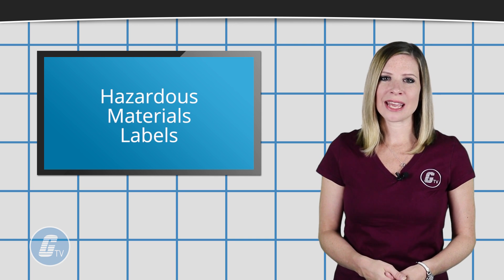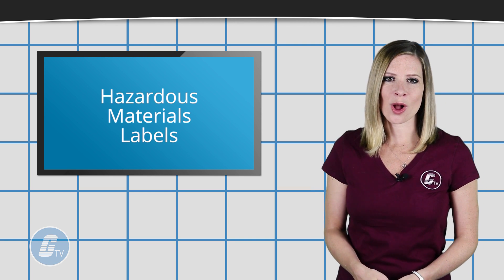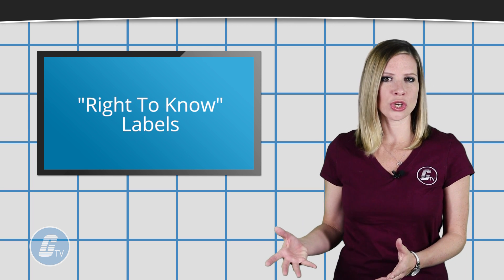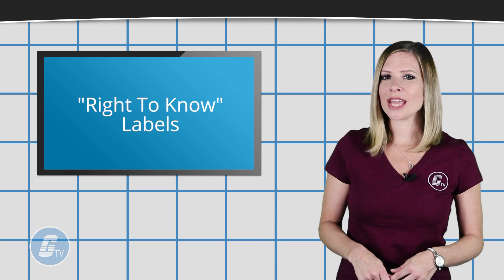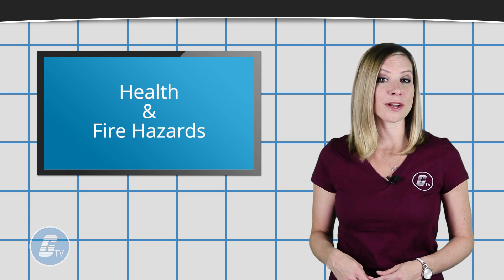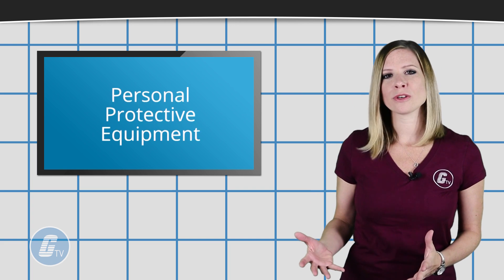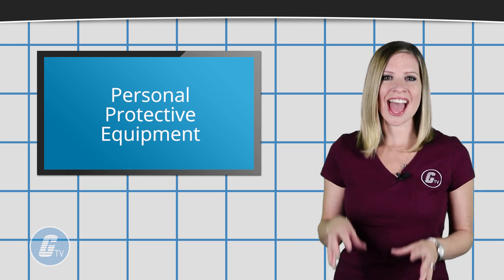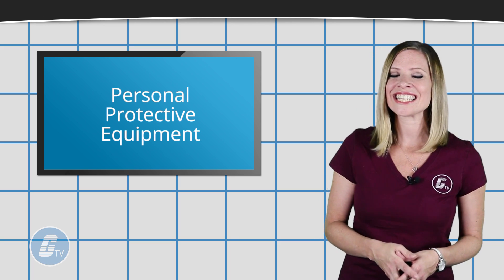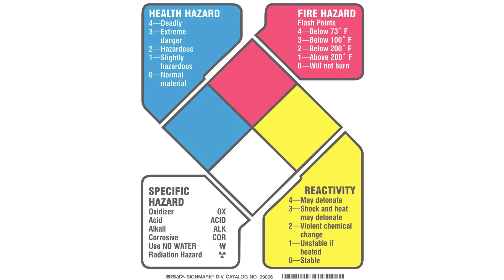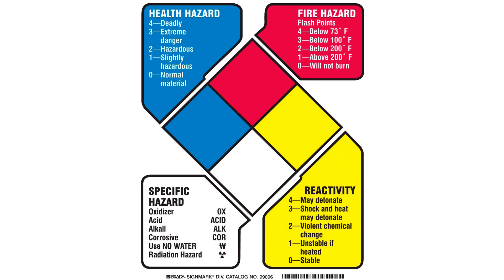Hazardous material labels such as these are also known as right-to-know labels and quickly communicate information about health and fire hazards, reactivity, and other personal protective equipment that needs to be worn when handling said materials. In this example, the label is split into four color-coded quadrants that are represented by a number scale that communicates the severity of the risk.